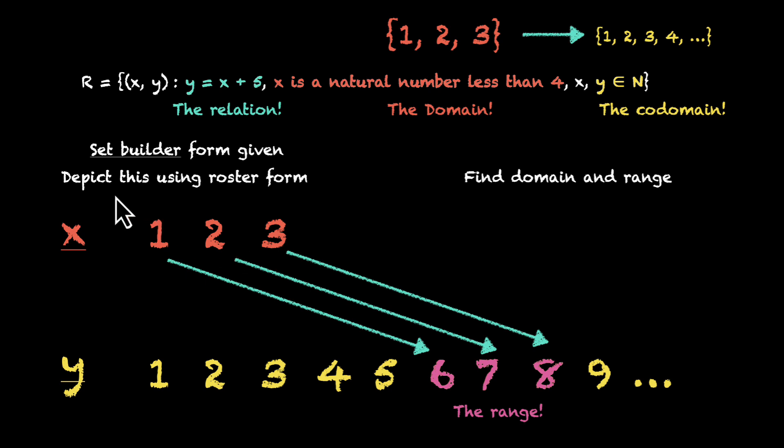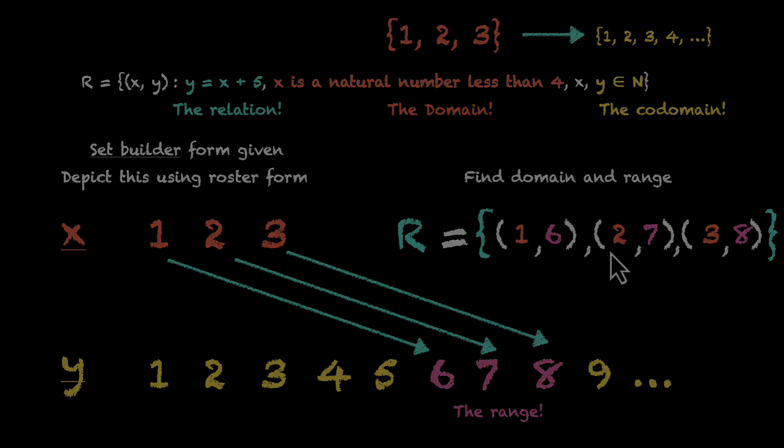We actually forgot to write this using the roster form. So let's do that. R is equal to, put in brackets and put in our ordered pairs. Don't forget the commas. The first will be one comma six, second will be two comma seven, and third will be three comma eight. And that's how you figure out the domain, range, co-domain. That's how you convert from set builder form to roster form.